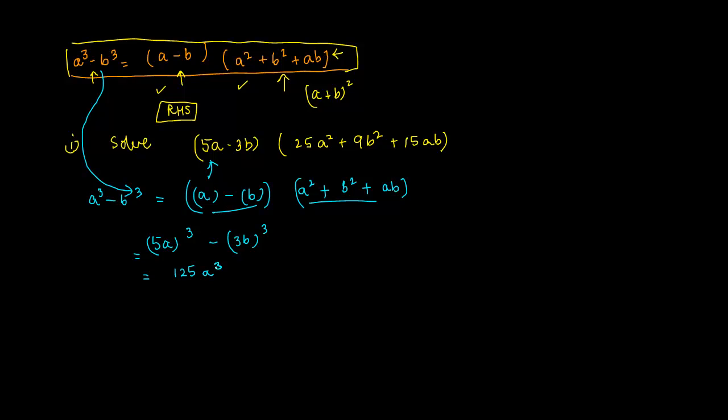(5a)³ will be 125a³, and (3b)³ will be 27b³. So the answer is 125a³ - 27b³.